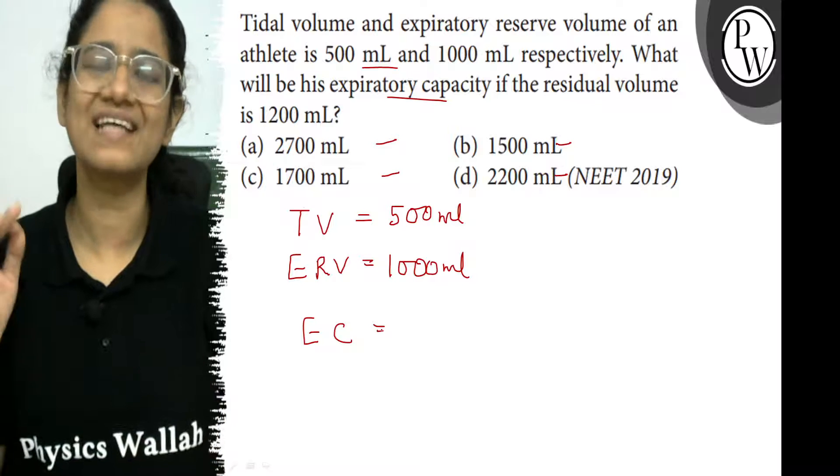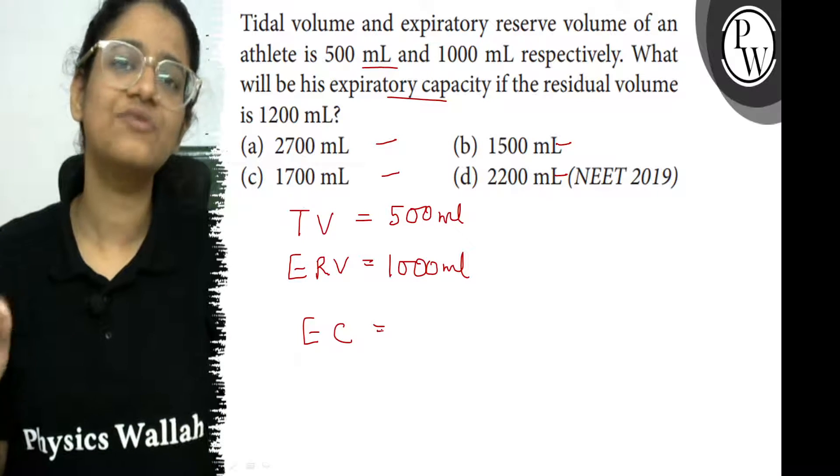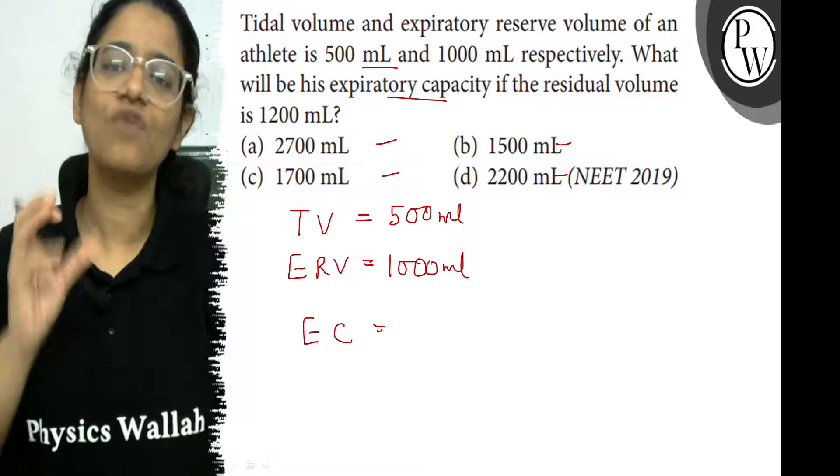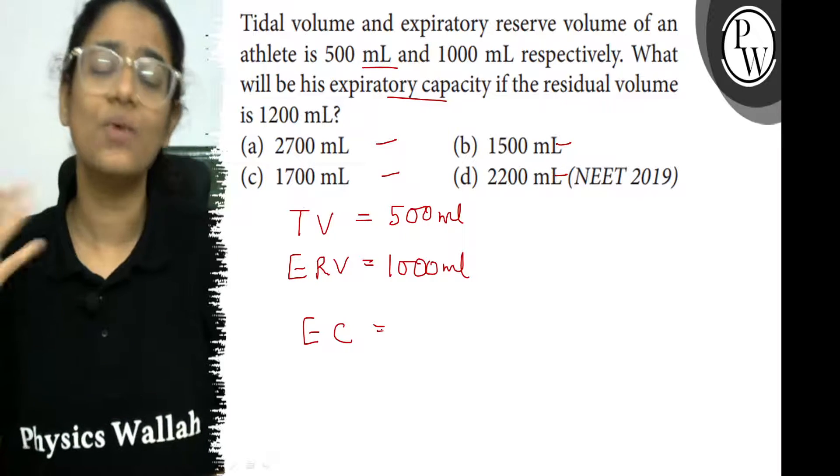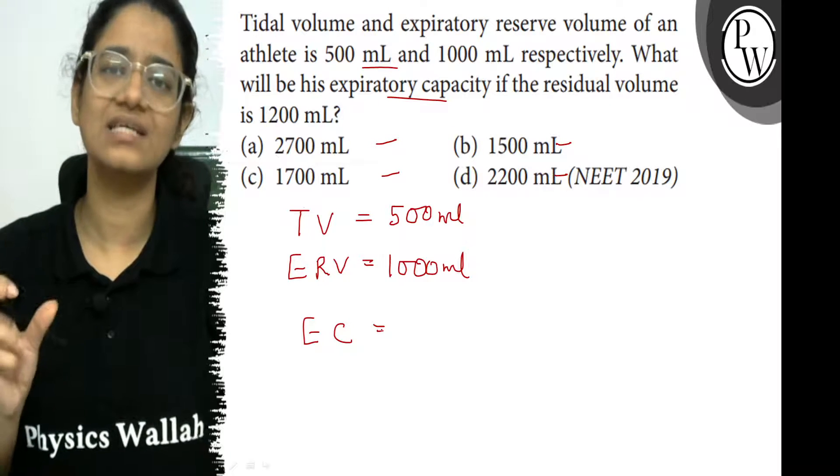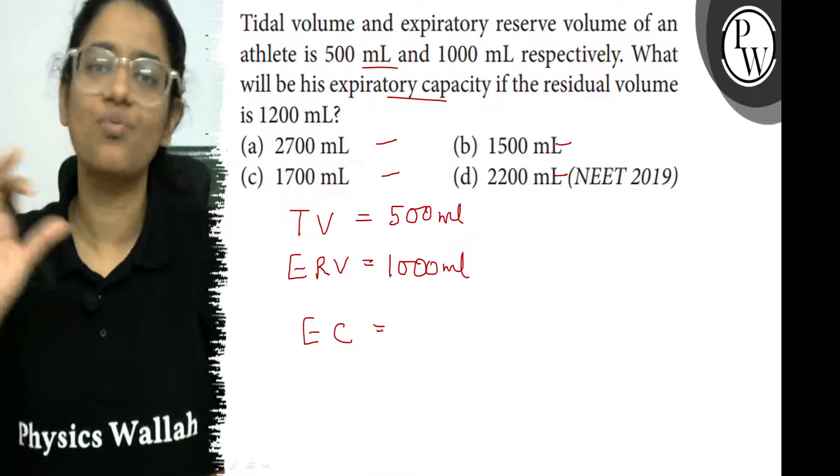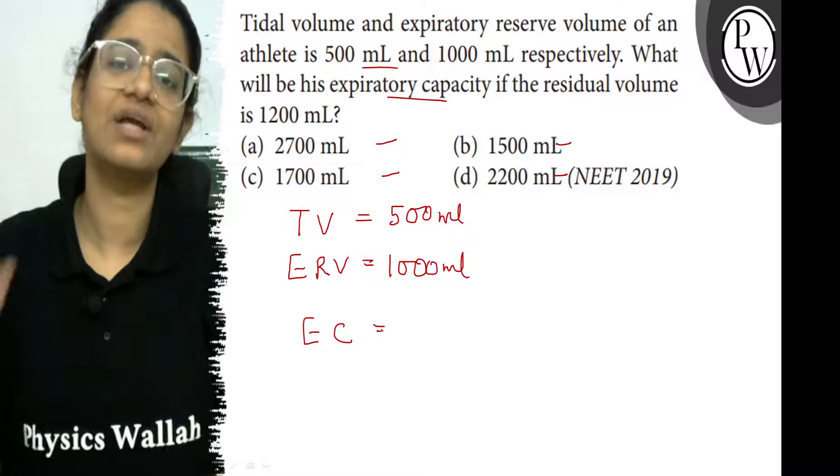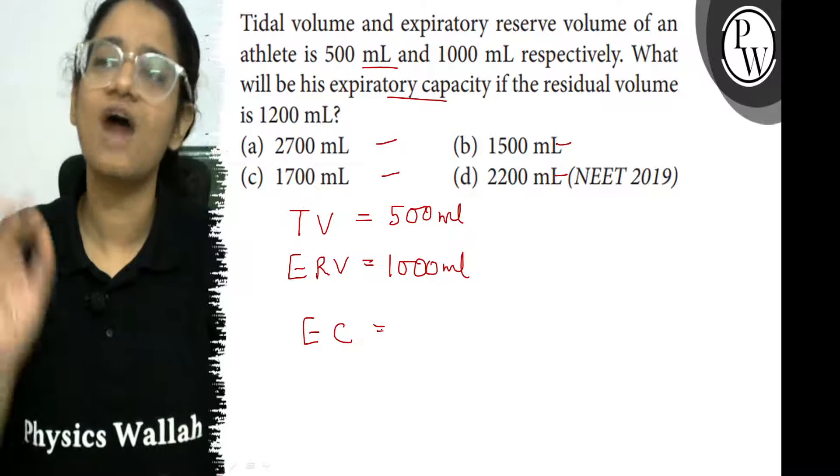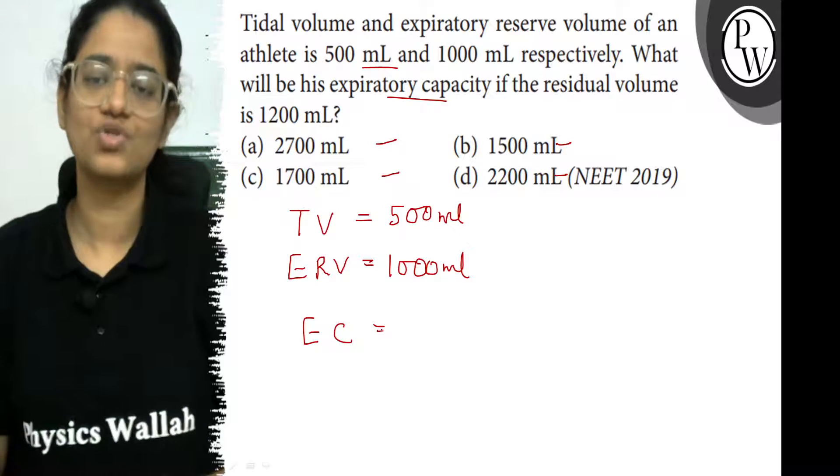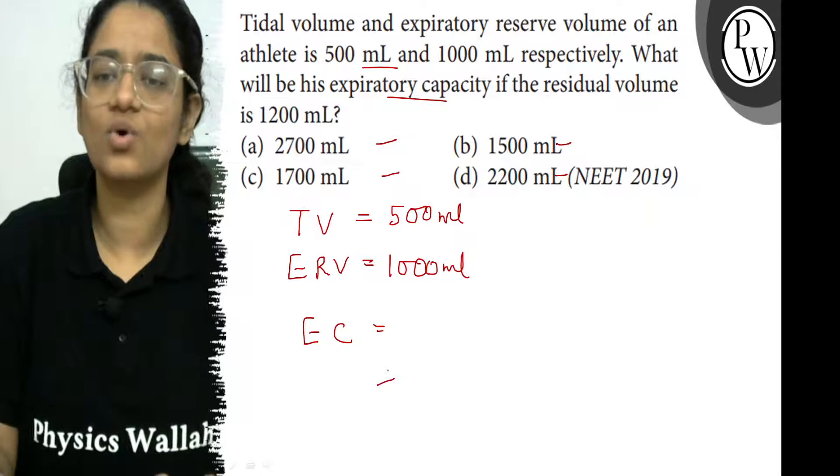So what is expiratory capacity? So expiratory capacity is the sum of tidal volume and expiratory reserve volume. Which means expiratory capacity is the total amount of air, total volume of the air which you can expire after a normal inspiration.